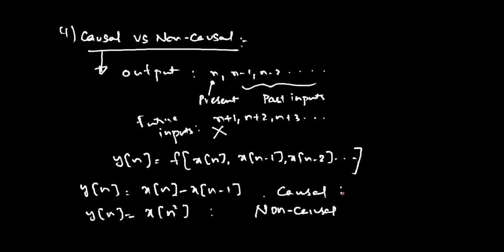If it is a causal system, you will see that the signal is right-handed, meaning the signal exists only on the right-hand side of the time axis. That is a simple trick to check whether a system is causal or non-causal — if x of t versus t or x of n versus n lies entirely at or above t equals 0, we say the signal is right-handed. The other way is the definition itself: if the output does not depend on future inputs, then it is said to be a causal system.